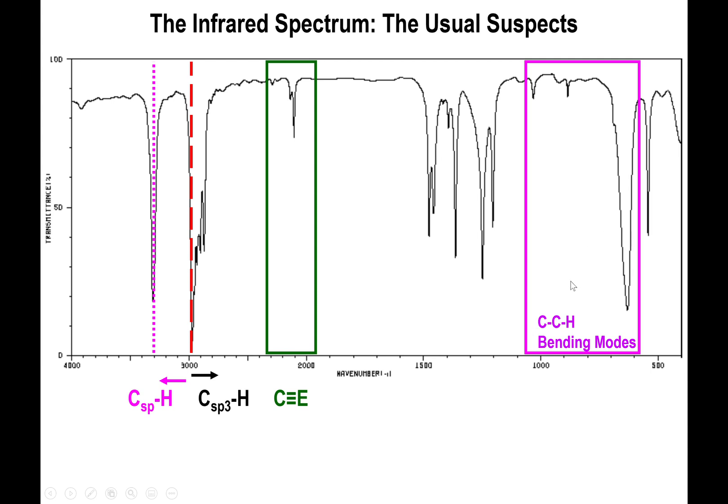Now this happens to be an alkyne because we do have a bond at about 2100, and notice as well that we have this bond at about 3300. So in combination with a triple bond at 2100 and the sharp peak above 3000 - and this is 3300 roughly speaking so it's a little bit farther away from 3000 than your typical alkenes - this is your terminal alkyne and this is the actual molecule for which the spectrum corresponds to.